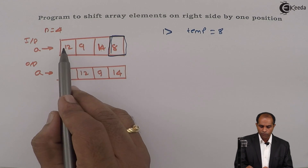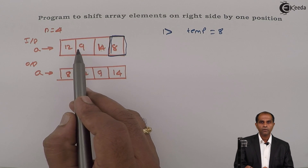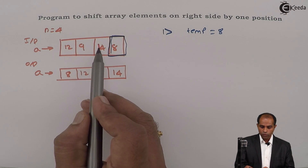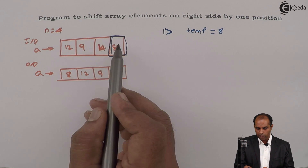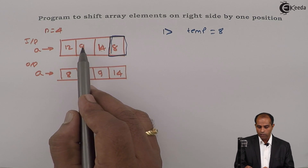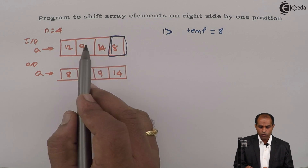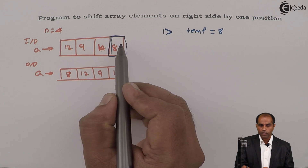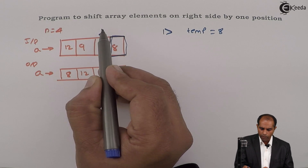You can't think of replacing 9 with 12 and then 14 with 9 directly, because when 9 is shifted onto 12, both elements will have 9 — you lose data. So you can't do that. What you need to do is, since I have taken the element from N minus 1, you start from N minus 2 and move toward 0.